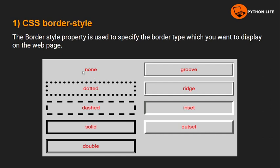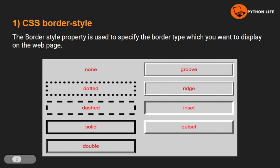The first border style value is none — no border is applied. The next one is dotted — the border is applied using dot symbols. The next one is dashed — this is a dashed style border. And the next one is solid — a solid single line border is created with the help of a solid line.